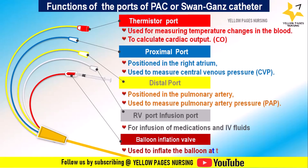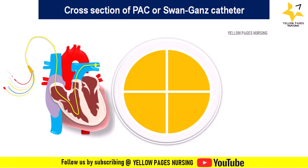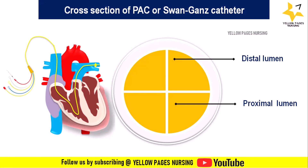Next is the right ventricle infusion or pacing port. This port is for infusion of medications and IV fluids, and is occasionally used for pacing the right ventricle. Next is the balloon inflation valve with a syringe attached — maximum volume is 1.5 cc of air. The balloon near the distal tip is used to measure pulmonary artery wedge pressure, also known as pulmonary capillary wedge pressure. Here is a picture of the cross-section of the pulmonary artery catheter with four lumens: distal, proximal, inflation, and thermistor.